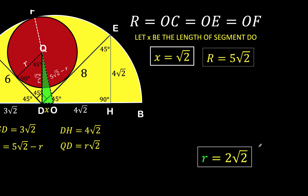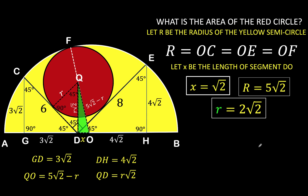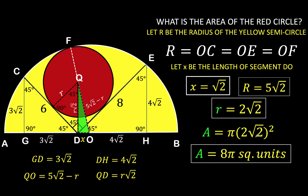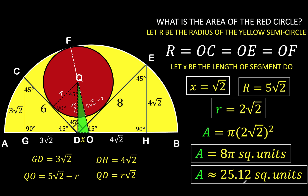So the radius of the red circle is 2√2. The area is π·r² = π·(2√2)² = 8π square units, or approximately 25.12 square units. And this is our final answer. This is Lando assistant, and we hope to see you again in our next video. See the beauty of mathematics.